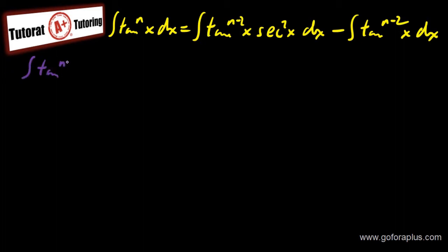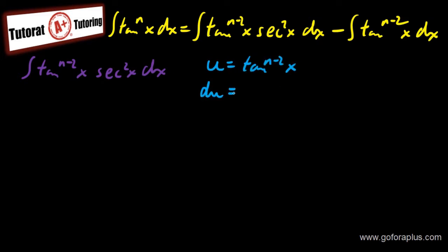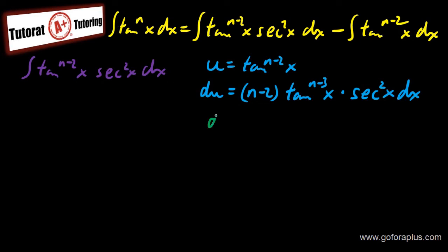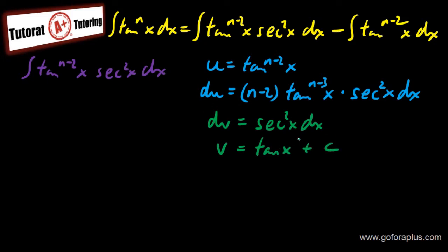Now I just need to work out this integral: the integral of tangent^(n−2)(x) · secant²(x) dx, using integration by parts. So what is my u and what is my dv? I set u = tangent^(n−2)(x), so du = (n−2) · tangent^(n−3)(x) · secant²(x) dx by the chain rule. And dv = secant²(x) dx, so v = tangent(x).